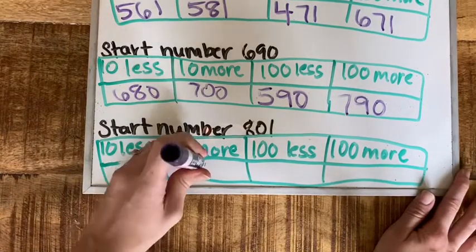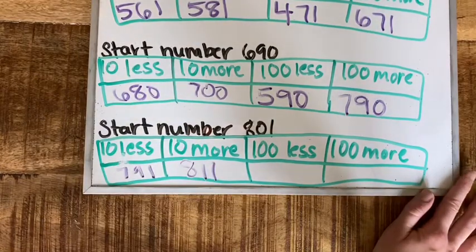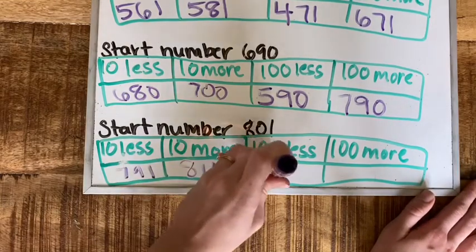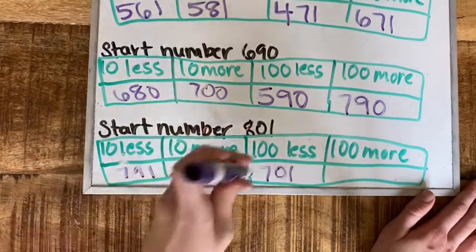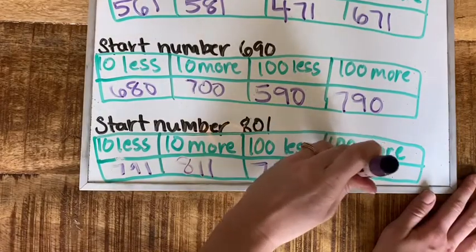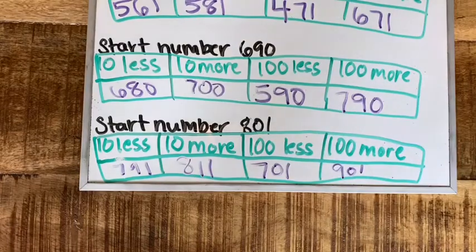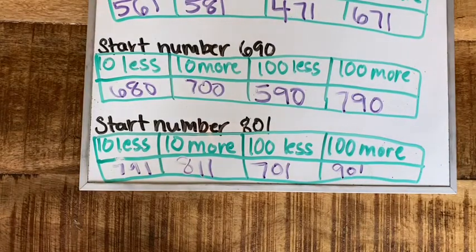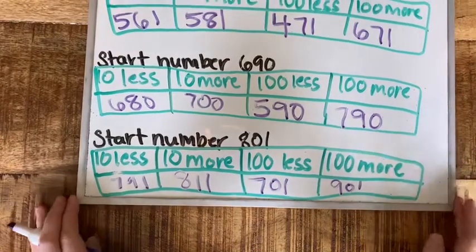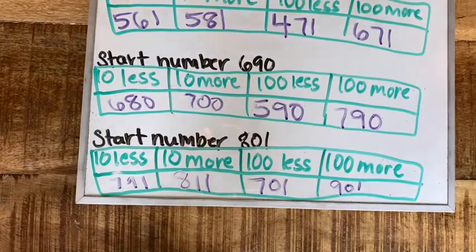Ten more, 811, because we didn't have anything in the tens place, now we have one in the tens place. 100 less is 701, and 100 more, 901. Now I'm not going to do page 326 with you because it is a lot like this, but I am going to do some of page 327 with you.